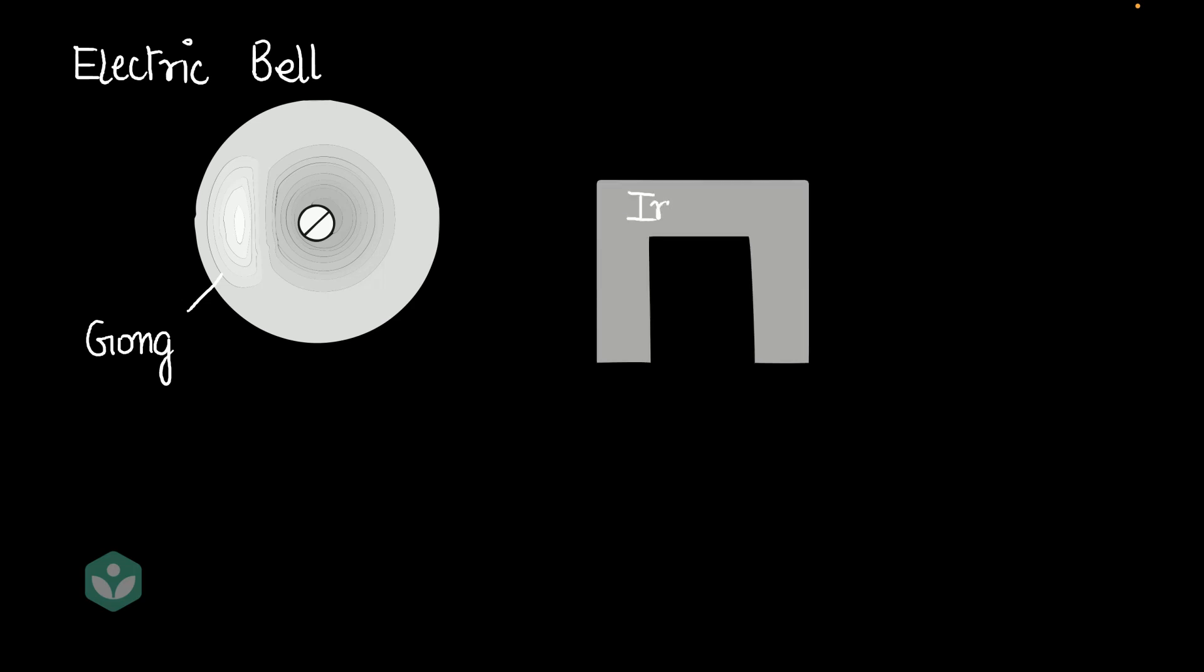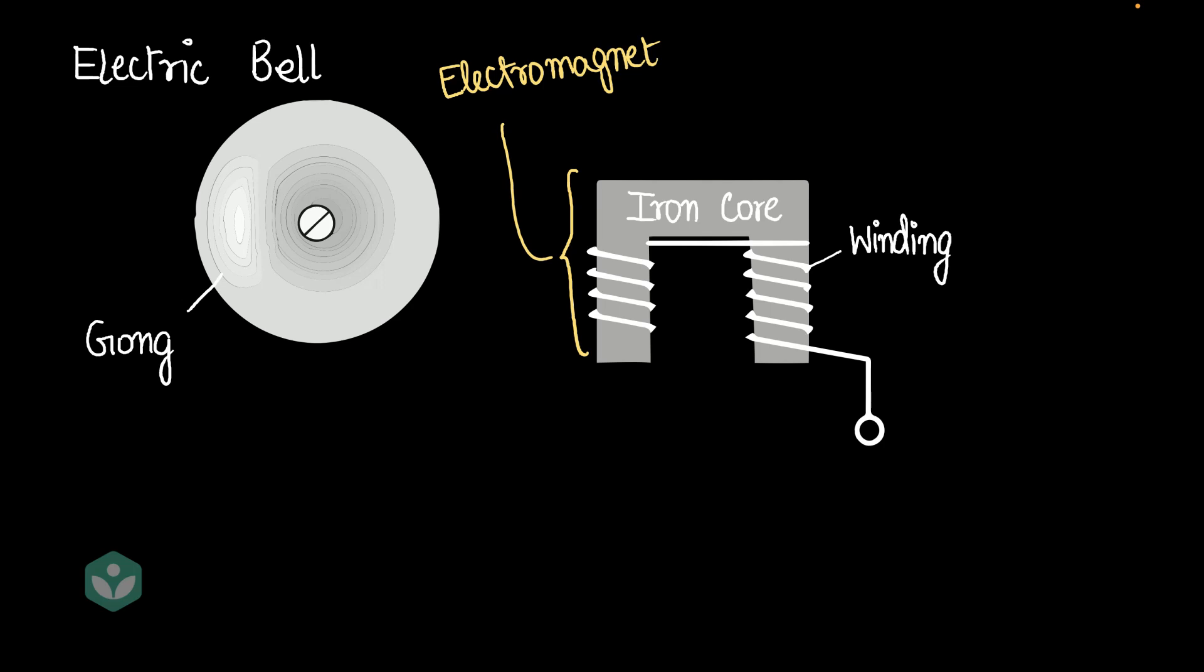Next, we also have something called an iron core. An iron core is just a piece of iron. We take some wire and wind it around this iron core, and this is called the winding. Now, this iron core and winding together behaves as an electromagnet when we pass current through the winding.